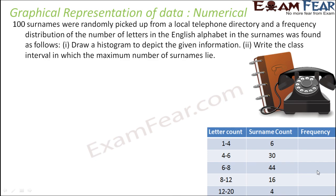Let us take one last numerical on the graphical representation of data. 100 surnames were randomly picked from a local telephone directory and the frequency distribution of letters in the alphabet in the surname was found: letter count 1–4 is 6, 4–6 is 30, 6–8 is 44, 8–12 is 16, 12–20 is 4. We have to draw the histogram. Class sizes: 4−1=3, 6−4=2, 8−6=2, 12−8=4, 20−12=8. All not the same.